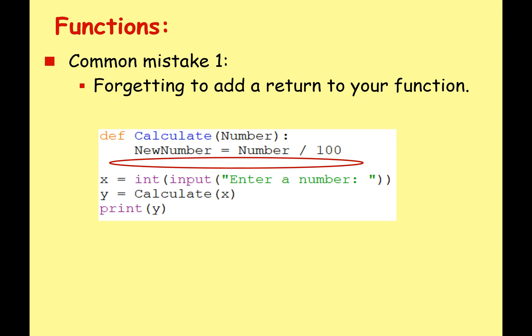Very easy to make mistakes though with functions. So common mistake one: forgetting to add a return to your function. So it's the same code as before, I've done the calculation here but I've just forgot to say return NewNumber.